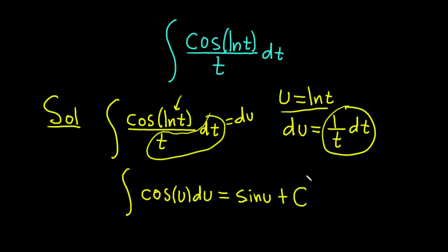The last thing to do is to replace the u with the function it actually is. The u is the natural log of t. So this is equal to the sine of the natural log of t, and then plus our constant of integration, capital C.